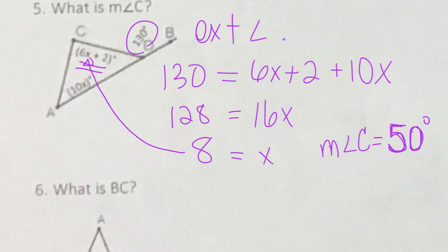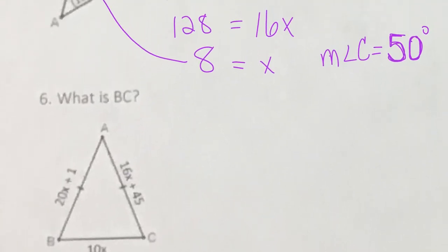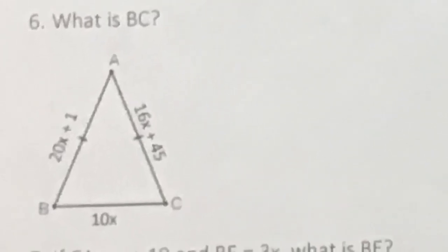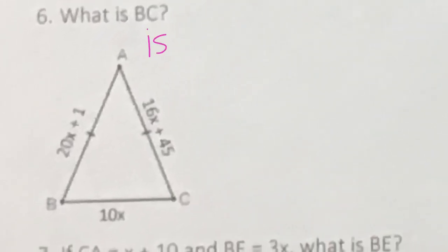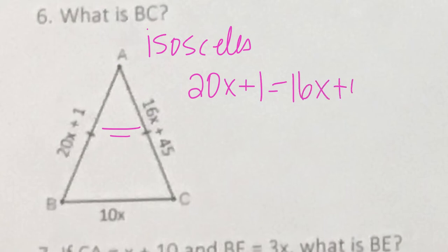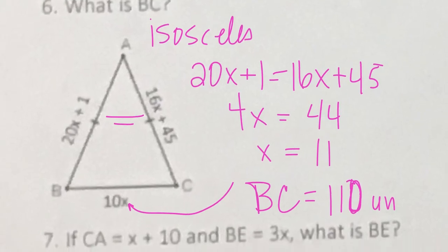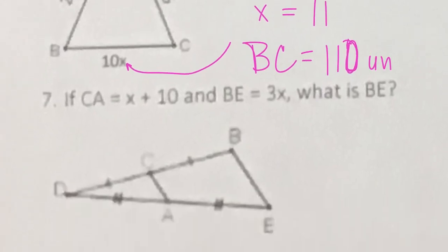The next problem asks for the length of BC, which is 10X. This is an isosceles triangle, which means our two legs are equal. So we set 20X plus 1 equal to 16X plus 45, solve for X, and get 11. Plugging in, 10 times 11 is 110, so BC is 110 units — the base of the isosceles triangle.